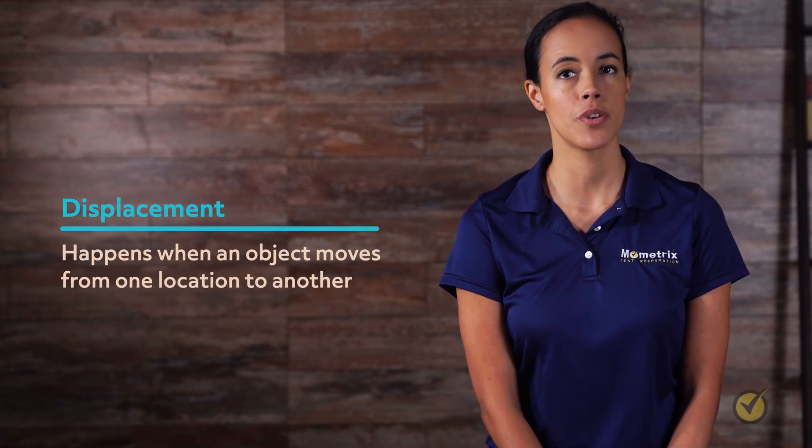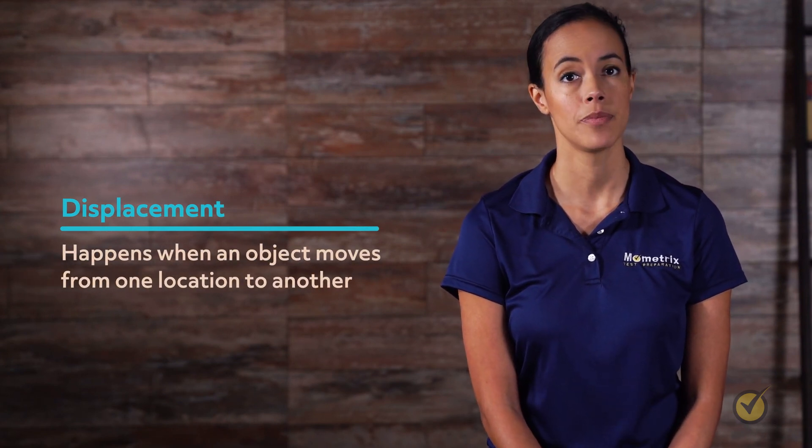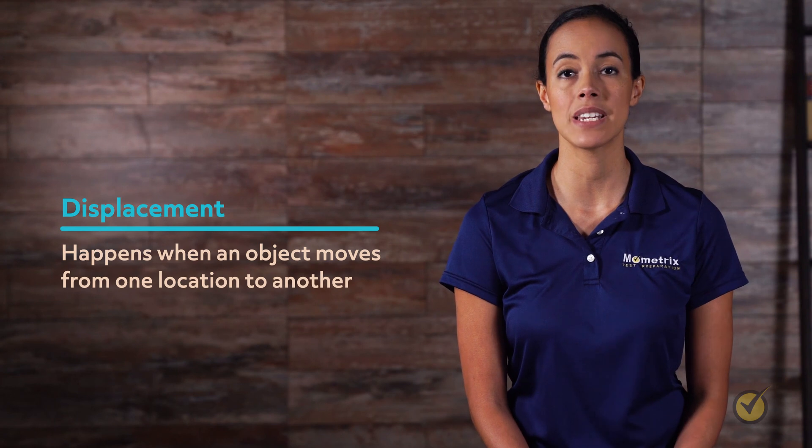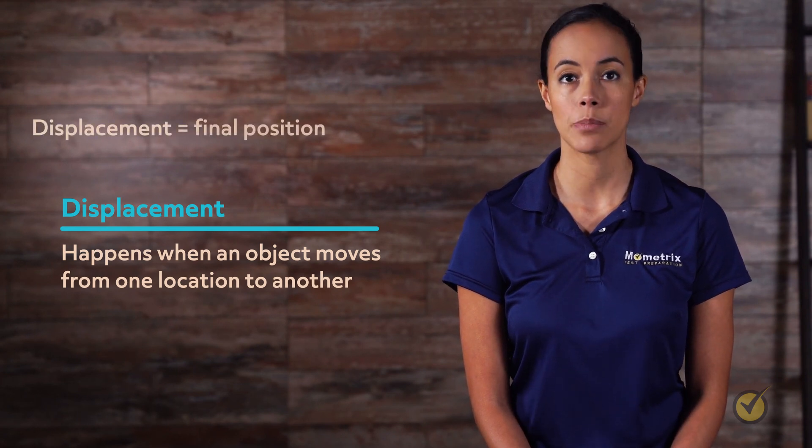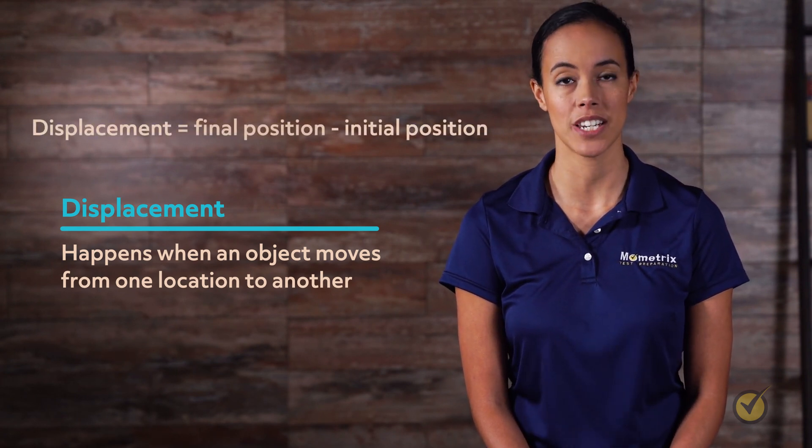Displacement happens when an object moves from one location to another. The general equation for displacement is displacement equals final position minus initial position.